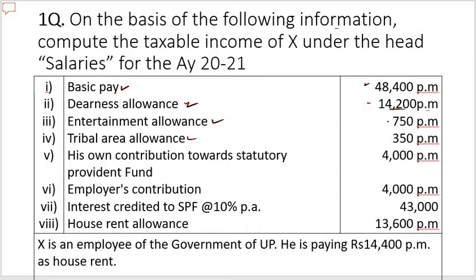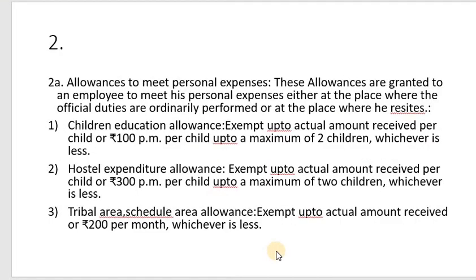Tribal area allowance: the exemption for scheduled or tribal area allowance is exempt up to the actual amount received or ₹200 per month, whichever is less. Here, tribal area allowance is ₹350 per month, and the exemption limit is ₹200 per month. So ₹200 into 12 = ₹2,400 is exempt, and the balance ₹150 per month is taxable.